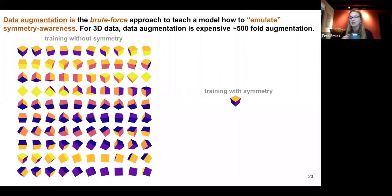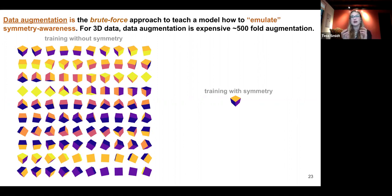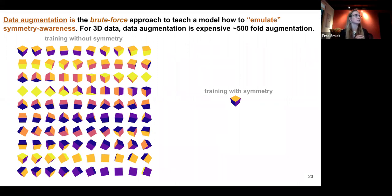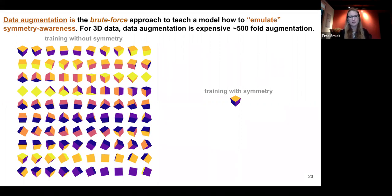Let's talk about data augmentation — it's the brute force approach to teaching your model to be symmetry-aware. There's no real guarantee that it's going to always behave predictably when you rotate an object, but in most cases that will work for 2D images. Typically people get away with about a 10-fold augmentation — image datasets tend to be pretty large and have many rotations within them already. But if you have 3D data like molecules in 3D space, data augmentation gets very expensive.